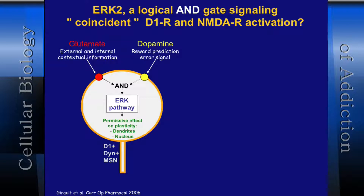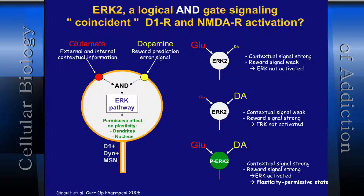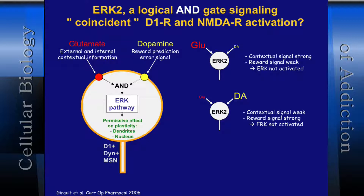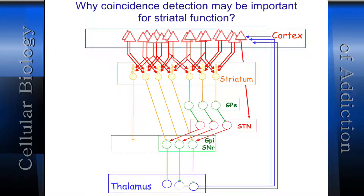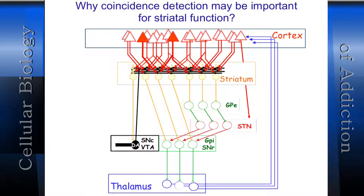If you only have glutamate but no dopamine, this is not sufficient — ERK is not activated. Vice versa: if you have dopamine but not glutamate, ERK is not activated. You really need both at the same time and place. You can imagine the scenario that various signals from cortex to striatum would be influenced in a selected fashion by dopamine release, such that specific activation of individual pathways within this circuit would be potentiated and maintained, responsible for short-term and longer-term changes in behavior.